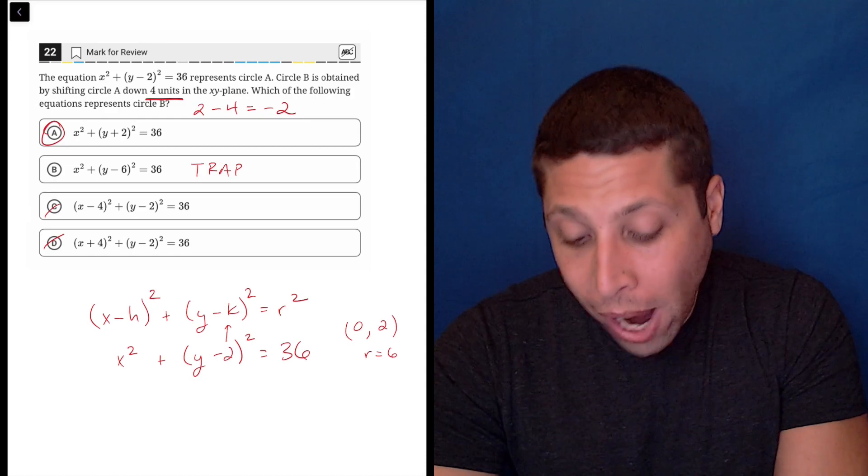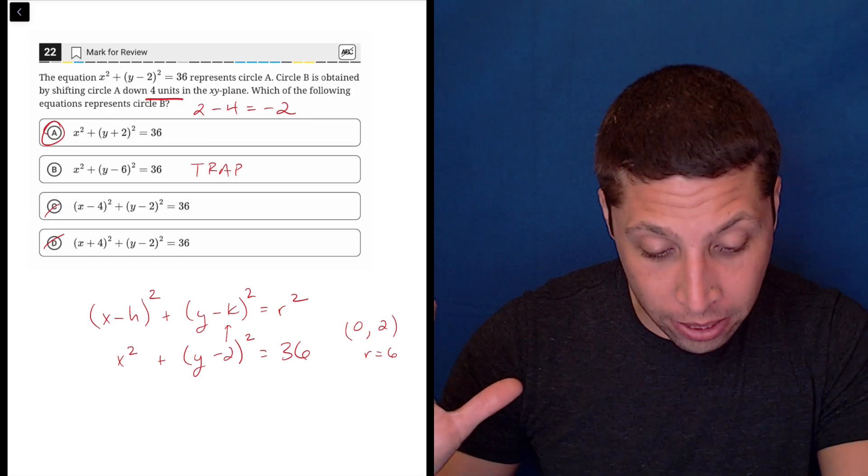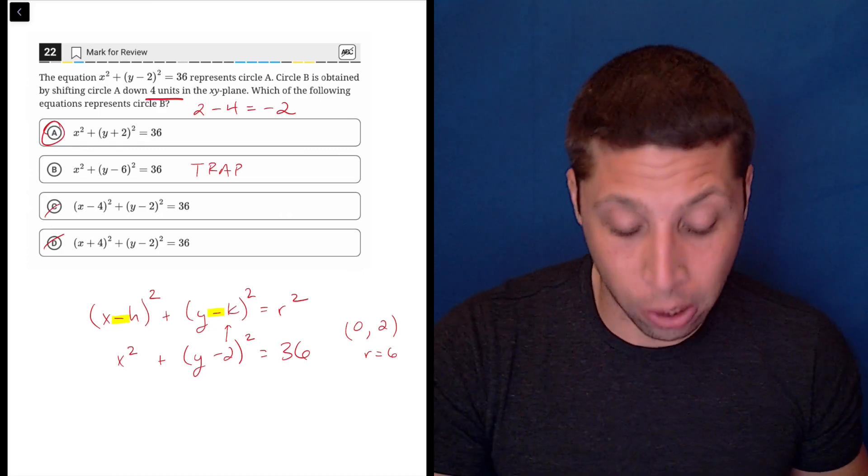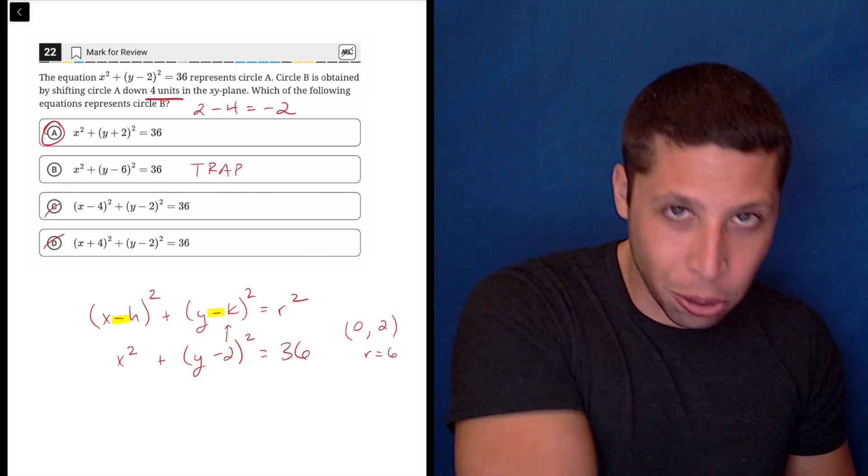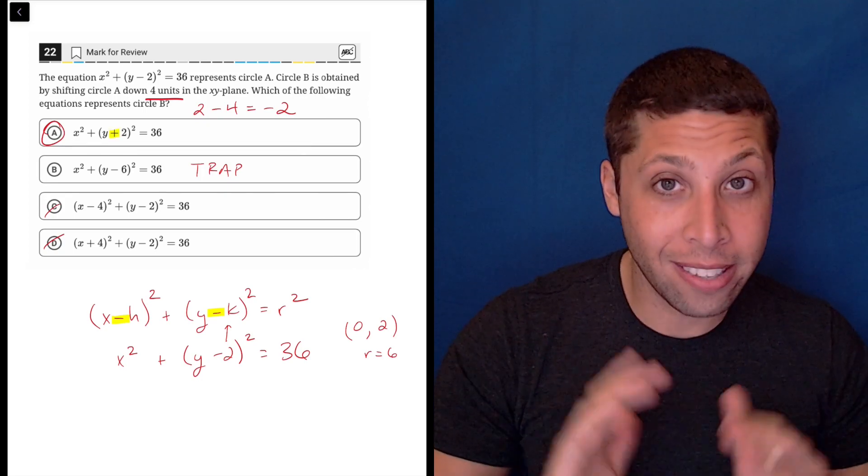And so when we write that new version, because the negative is built in to the actual generic form of the equation, when we do the negative of the negative 2, it's going to look positive in the new equation. So A is the answer here.